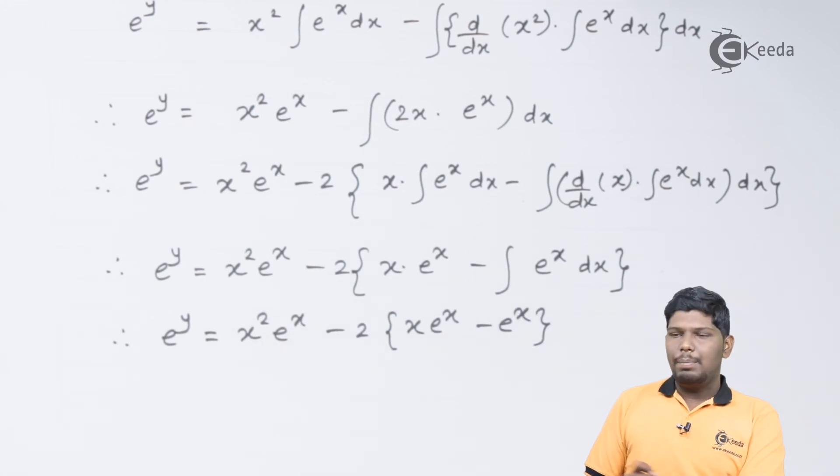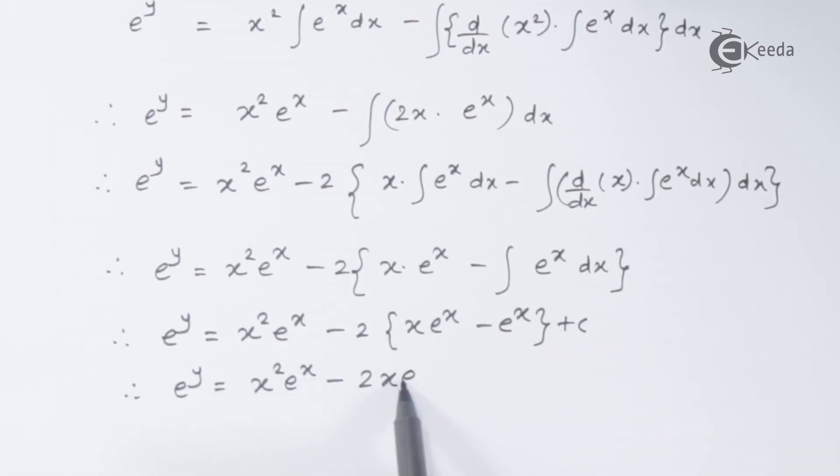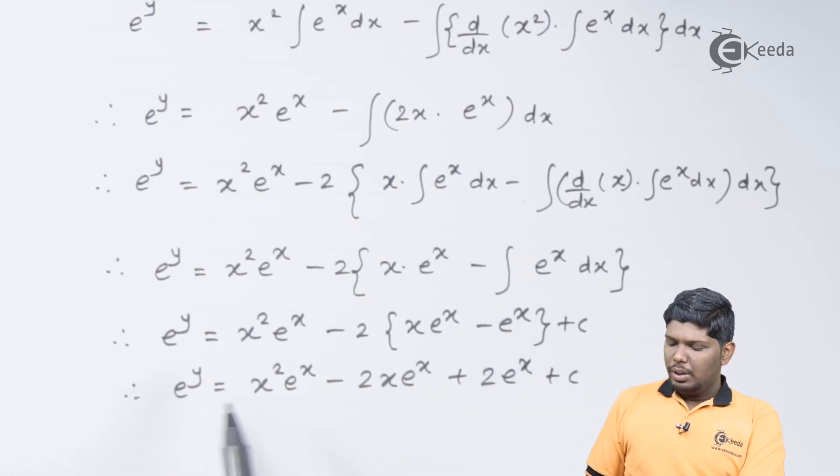Again, in the next step, integral of e raised to x will be e raised to x only. Now, here we can simplify this bracket by multiplying minus 2 to both the terms. That will give you e raised to y as x squared e raised to x minus 2x e raised to x minus into minus will be plus 2 e raised to x plus c.